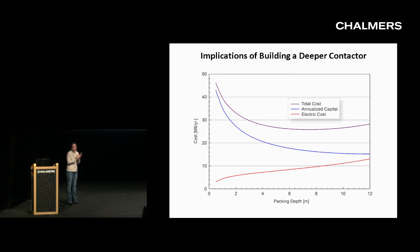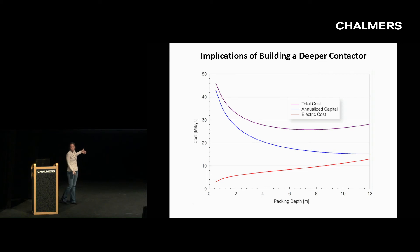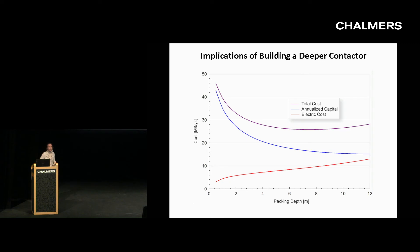If you're at a place with cheap electricity — like Oklahoma in the U.S. — then maybe you can afford to go to a deeper bed with carbon-free, cheap electricity, and therefore minimize your initial investments by not having to make such a wide contactor. So there are interesting cases where you can think through this optimization.